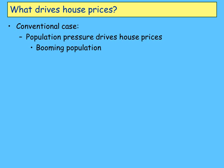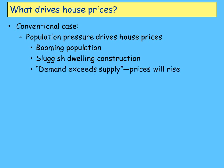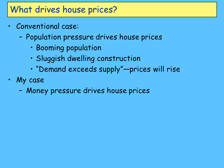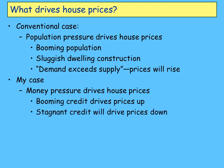We have a booming population — there's no argument about that — and sluggish dwelling construction. And therefore, demand exceeds supply, and that's going to drive prices up. That's the conventional case. Mine is that money pressure is what drives house prices higher, and booming credit is what drives house prices up. And when we start getting stagnant credit, which is starting to happen right now, we'll see house prices going down.